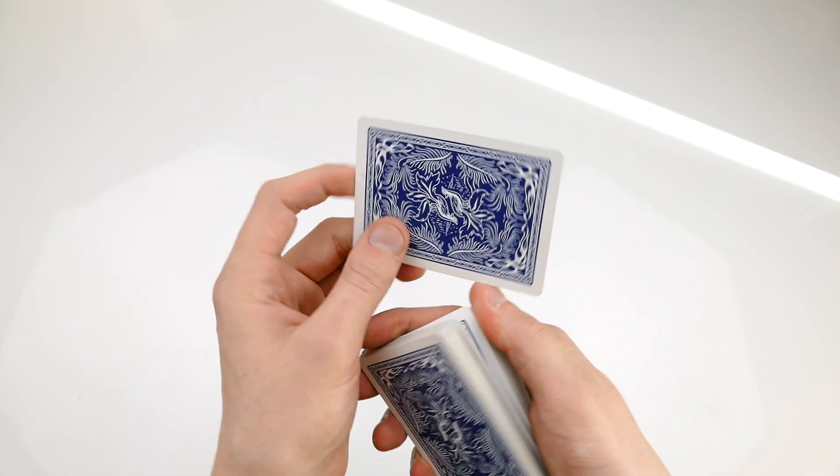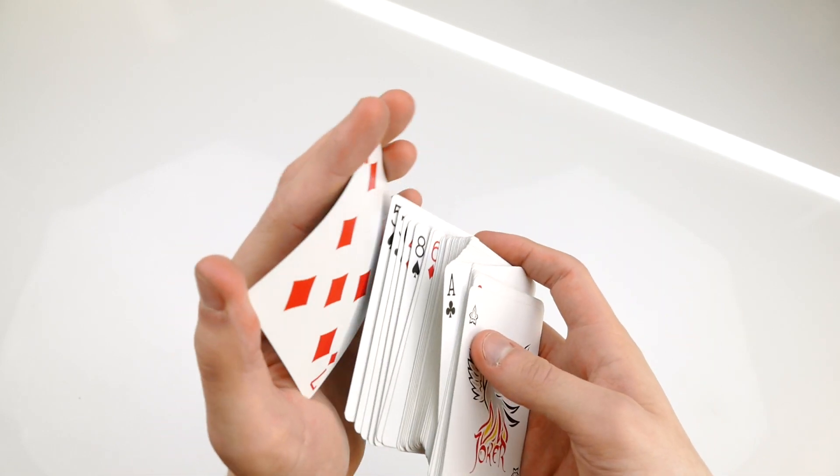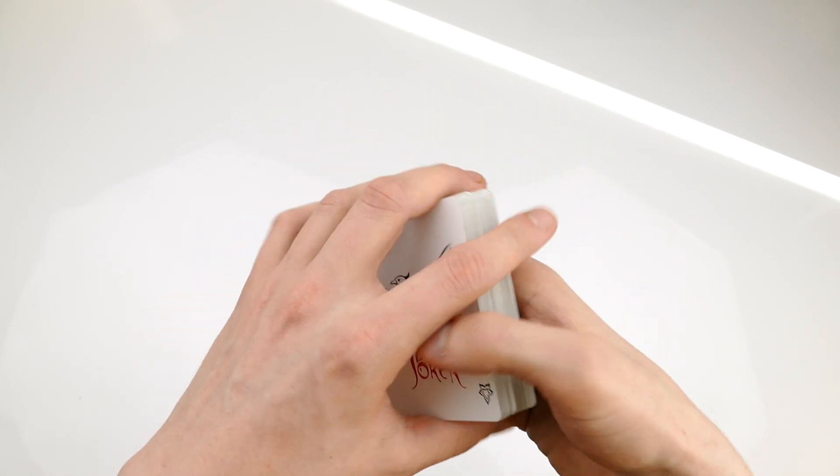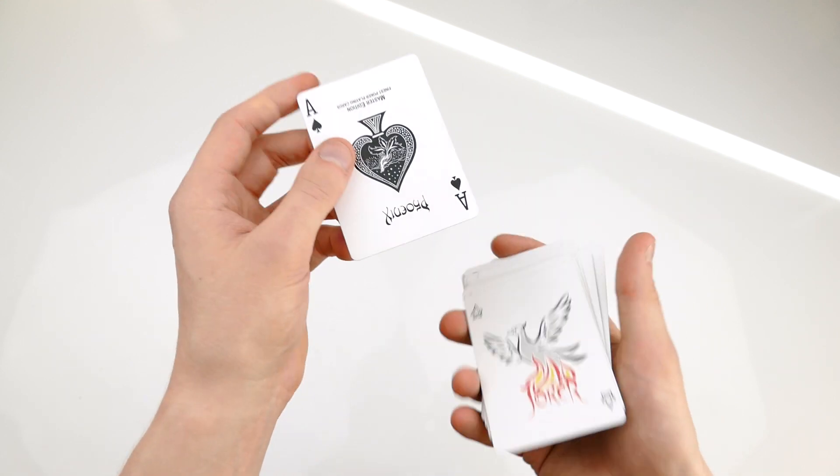You're going to take any card you like and you're going to control it second to the top however you want on top of the deck. So right now it is second from the top. For this explanation I am going to be using the ace of spades.